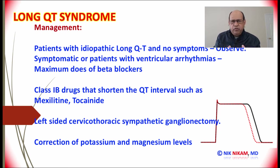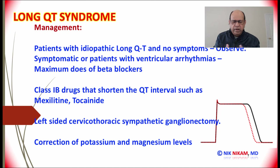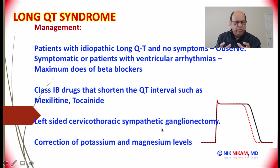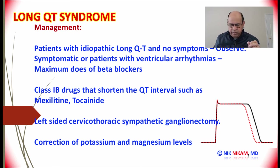If these patients are having significant ventricular arrhythmias and have a history of syncope, we could consider cervicothoracic sympathetic ganglionectomy. And of course, correction of electrolyte imbalances might help to minimize these ventricular arrhythmias and syncope.